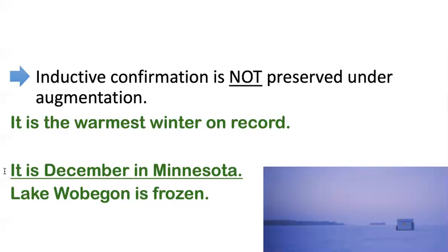No longer is my original evidence a good basis — a good scientific theory, for example — for suggesting that the lake would be frozen. So I can undo inductive confirmation just by adding more, and I don't have to take stuff away. This really illustrates how deductive validity is so different from inductive confirmation.